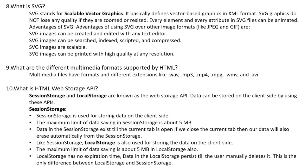Question 10: What is HTML Web Storage API? Session Storage and Local Storage are known as the Web Storage API. Data can be stored on the client side by using these APIs. Session Storage is used for storing data on the client side; the maximum limit of data saving in session storage is about 5 MB. Data in session storage exists till the current tab is open — if we close the current tab, then our data will also be erased automatically. Local Storage is also used for storing data on the client side with a maximum limit of about 5 MB. Local storage has no expiration time; data in local storage persists till the user manually deletes it. This is the only difference between local storage and session storage.